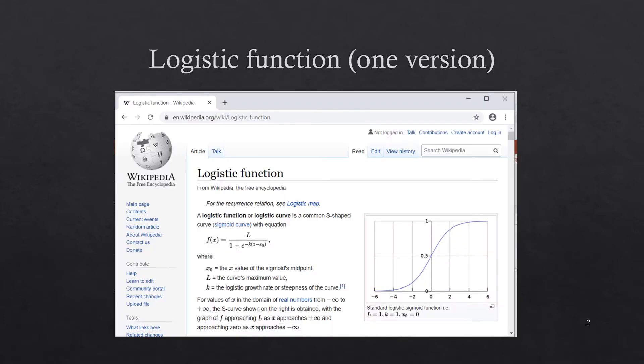Our first example of a function will be the logistic function, or one version of the logistic function, which is an s-shaped curve shown here.